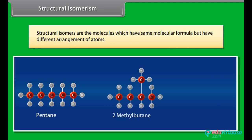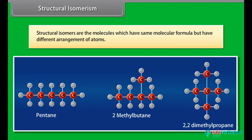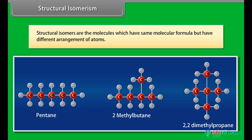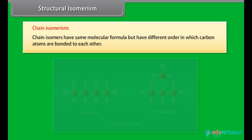Structural isomers are molecules which have the same molecular formula but have different arrangement of atoms. Chain isomers have the same molecular formula but have different order in which carbon atoms are bonded to each other.